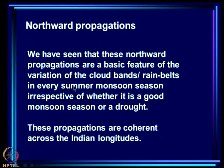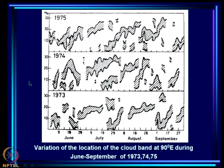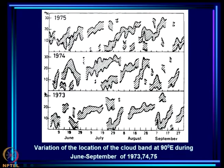Northward propagations are a basic feature of the variation of cloud bands or rain belts in every summer monsoon season, irrespective of whether it is a good or poor monsoon season. For example, for the years 1973, 1974, and 1975 — where 1974 was a drought — these northward propagations always occur; this is of course at 90 degrees east.